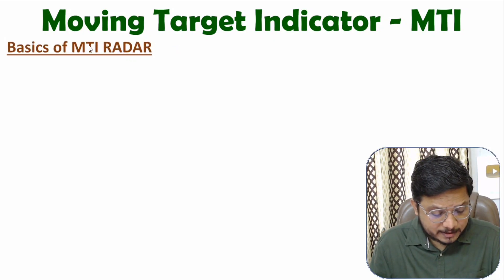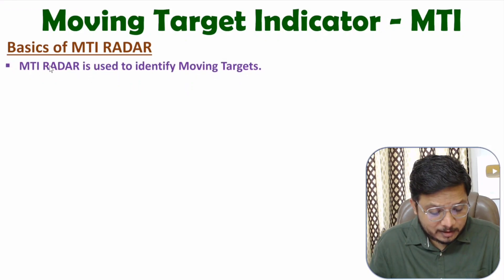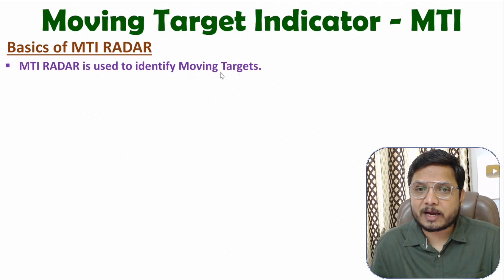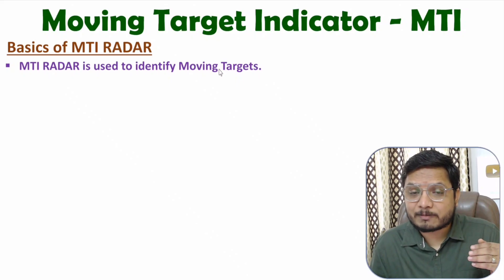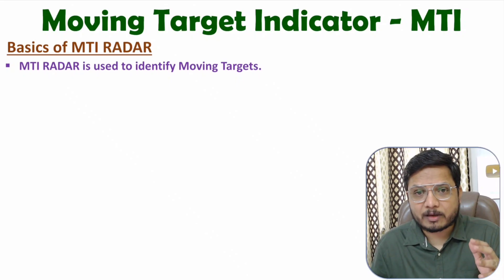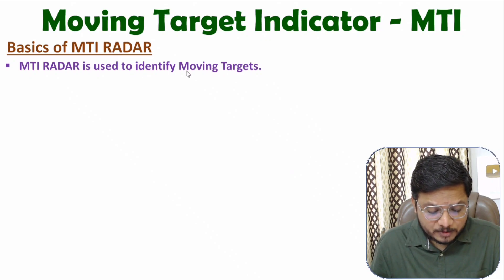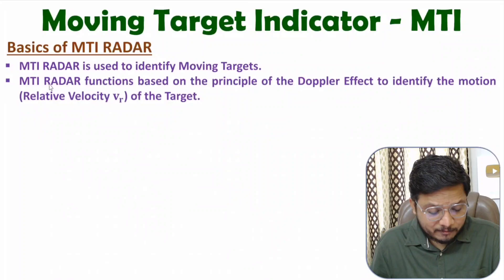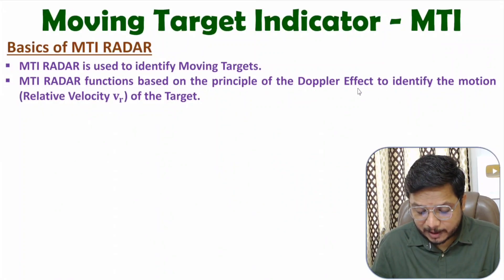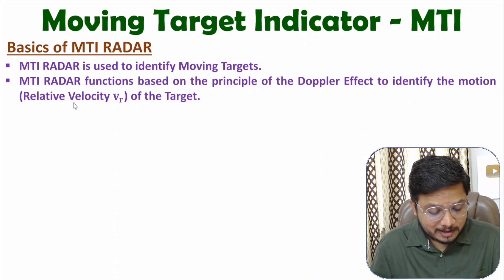MTI means Moving Target Indicator. Based on the name, you can understand it is identifying moving targets only, so MTI radar is used for moving objects. In my last video I explained pulsed Doppler radar, which is also used for moving objects. MTI radar functions based on the principle of the Doppler effect.